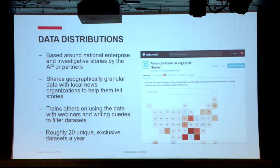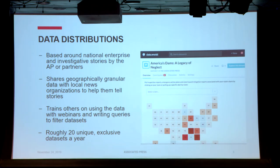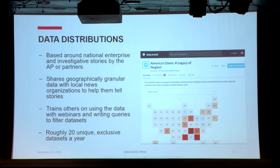We would work for months standardizing data, collecting it, doing the analysis. We would write one, maybe two national stories, and then kind of throw that work away and go on to the next story. We looked around and thought about the function of the AP, which is a news collaborative with members from around the U.S. and the world. We were leaving a lot of stories uncovered — this data we were using to tell a national story can also tell really great local stories if we get it into the hands of the right people.